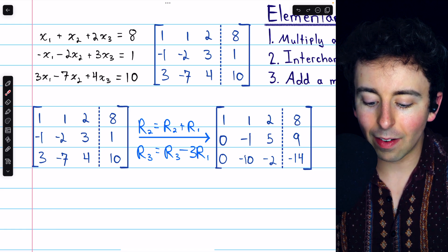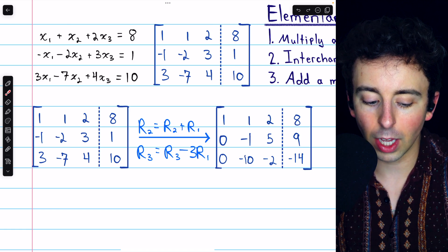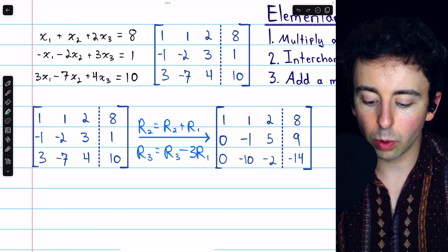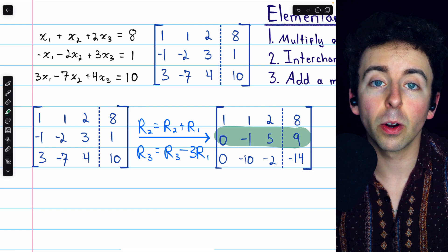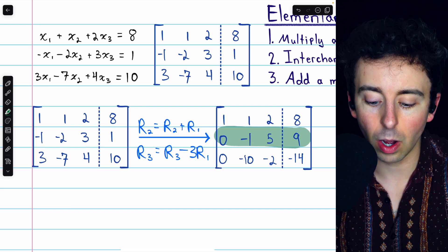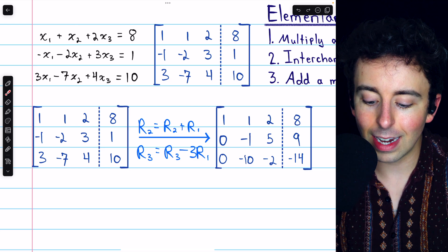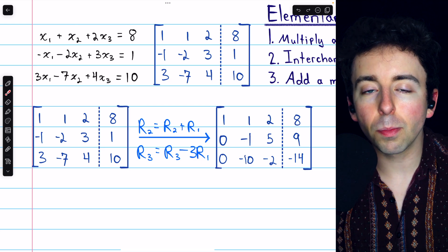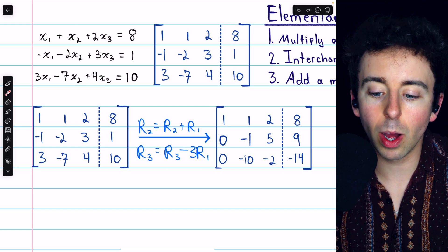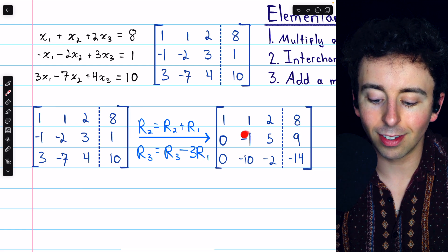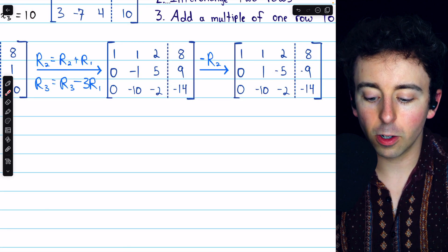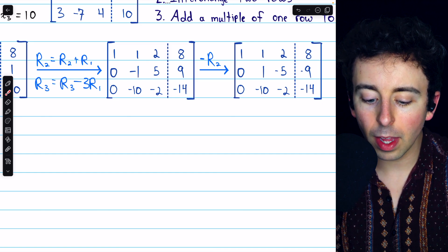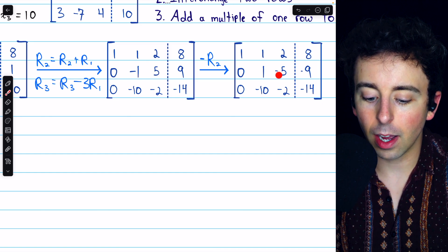Alright, so we have this leading 1 in row 1 with zeros below it. Now we'll move on to row 2. We want row 2's first non-zero entry to be positive 1. Right now, it's negative 1. So we'll multiply row 2 by negative 1 to turn this first non-zero entry into a positive 1. And that gets us here. Now this is a positive 1. And of course, this 5 has become negative 5. And 9 is now negative 9.